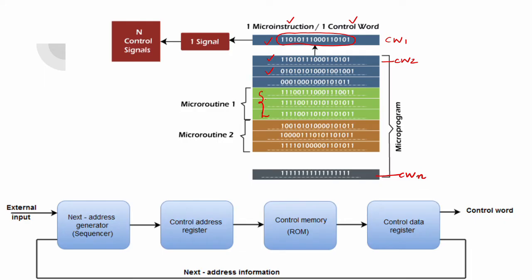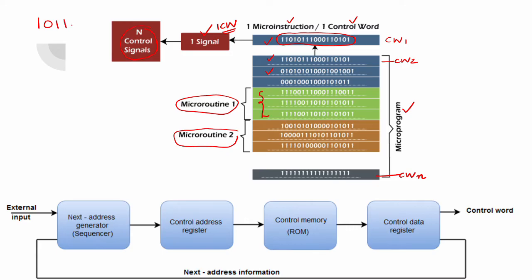A set of three control words together performs one minor operation such as store or load — that is, a specific operation. Each such group is called a micro routine. All the micro routines together make up the complete microprogram, which is stored in the control store. So all control words are stored in the control store.